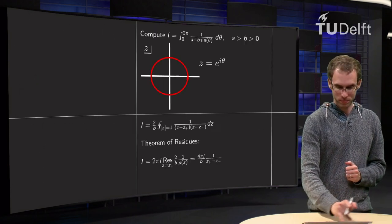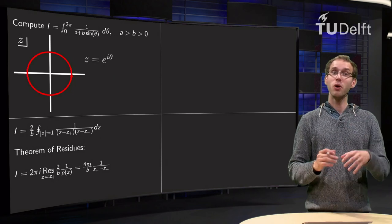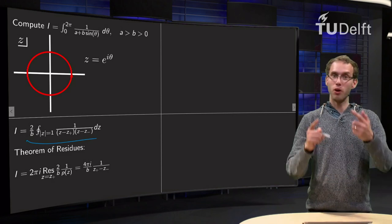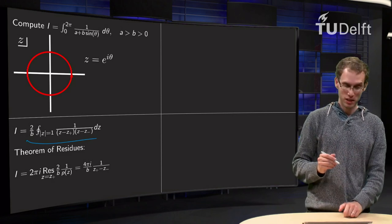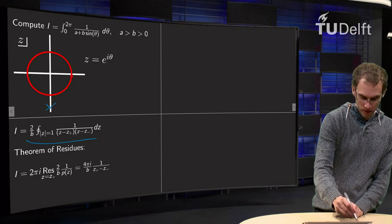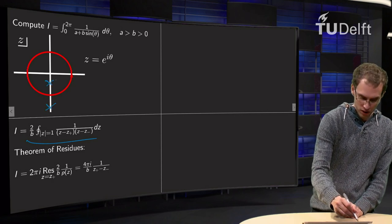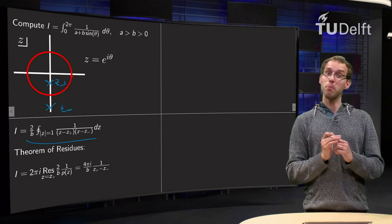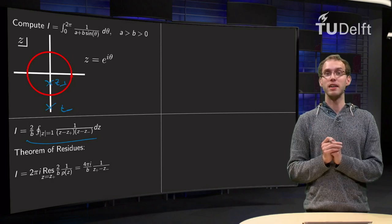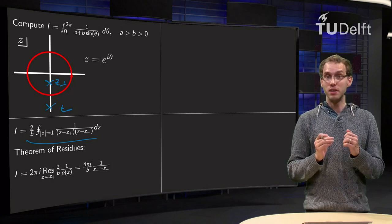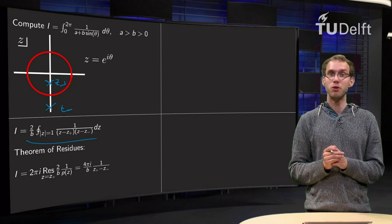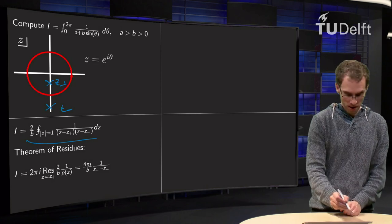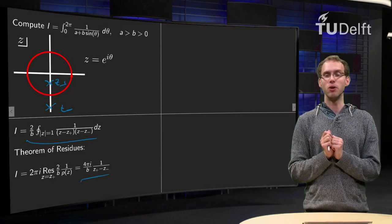So, let's summarize a bit. We had our integral, we have rewritten it in terms of 2 over b times the integral 1 over z minus z plus, z minus z minus. We know where they are, z plus is inside and z minus is outside the unit circle, so we can apply the theorem of residues, the integral equals 2 pi i times the residue of f in z plus. Well, that residue is easy to compute, multiply by z minus z plus and plug in z equals z plus, that gives us the term over here, so there we have our integral.